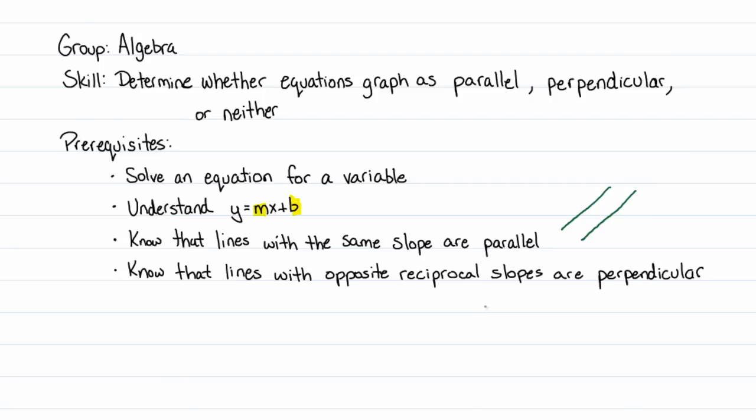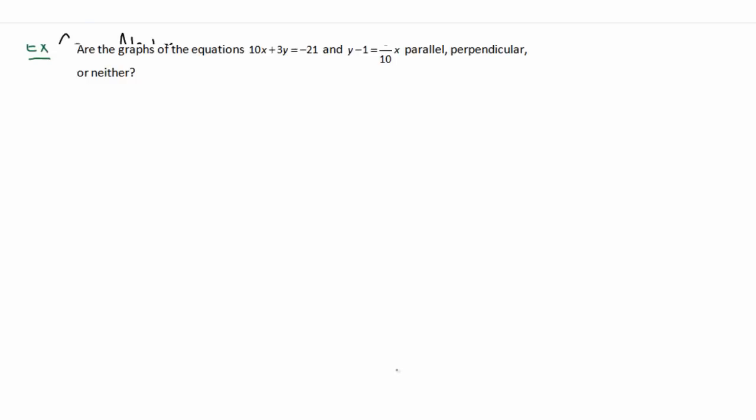You should also know that lines with opposite reciprocal slopes are perpendicular. In other words, if you have a line that has a slope of three-eighths and a line that has the slope negative eight-thirds, those two lines would be perpendicular because to get from the first slope to the second slope, you'd flip it—take its reciprocal—and you'd attach a negative to the front of it.